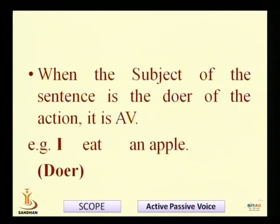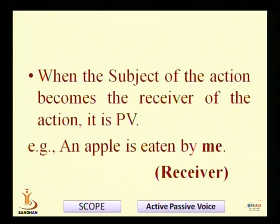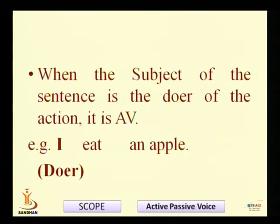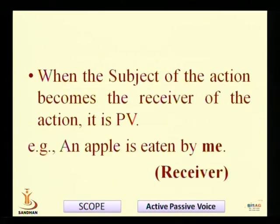Passive voice, at the most, can be used in two occasions: when the doer is not known, or when the doer of the action is to be hidden. It is only in such cases that passive voice is used; otherwise, active voice is more preferred. In passive voice, when the subject of the sentence becomes the receiver of the action, it is called passive voice. For example: 'I eat an apple' (active) changes to 'An apple is eaten by me' (passive). The subject 'I' becomes the receiver, and we also note the change of 'I' to 'me.'